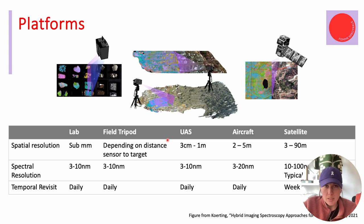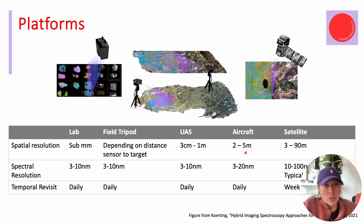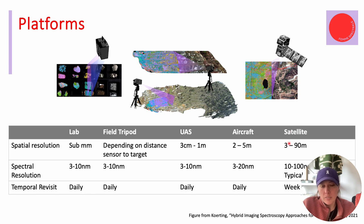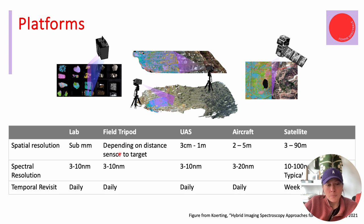We usually end up somewhere between 6 to 15 centimeter pixels for UAS. For aircraft, we're somewhere between 2 and 5 meters, sometimes 9. For satellites, some high-performing multispectral satellites go up to 1 meter in the visible-to-near infrared, but a very typical hyperspectral visible-to-near and shortwave infrared satellite would be around 20 to 30 meter pixels. Spectral resolution depends on the instrument and the size of the optical system the payload allows, so it's hard to give a clear number for each platform, but at least there are some ballpark numbers here.